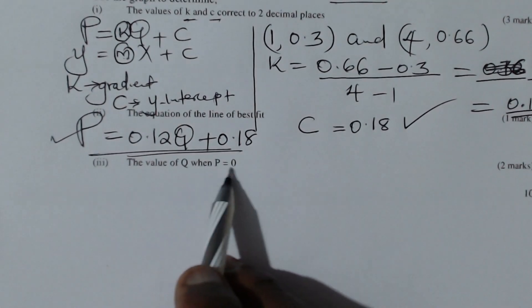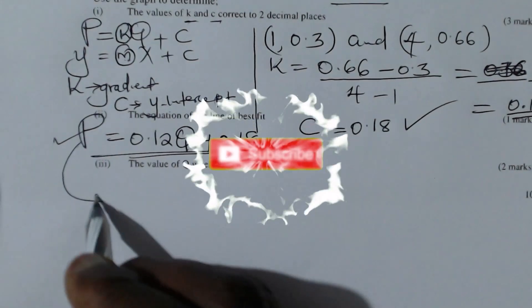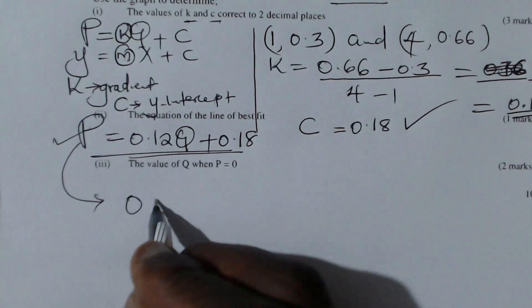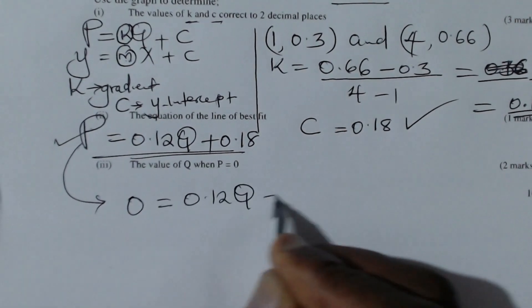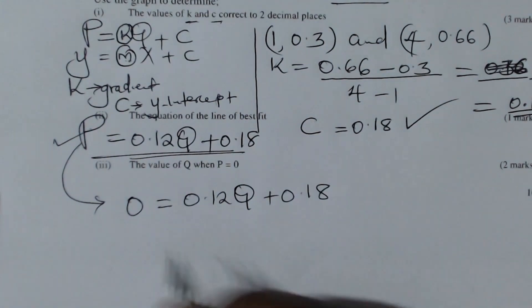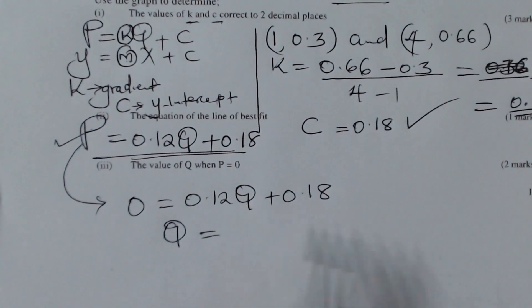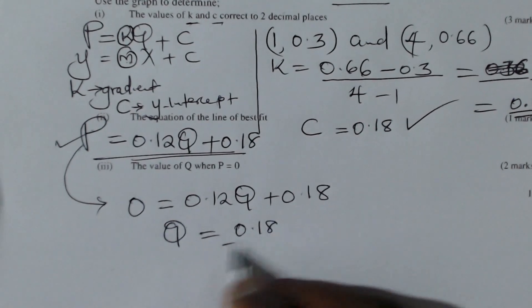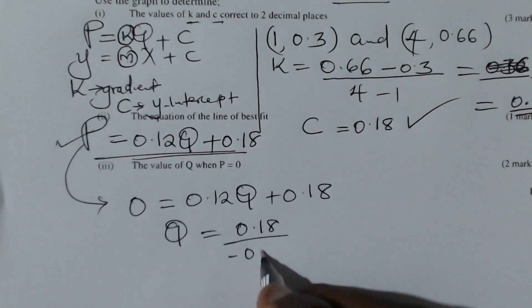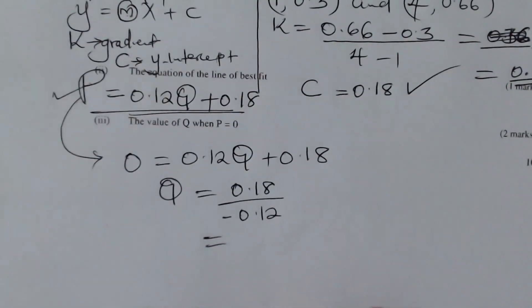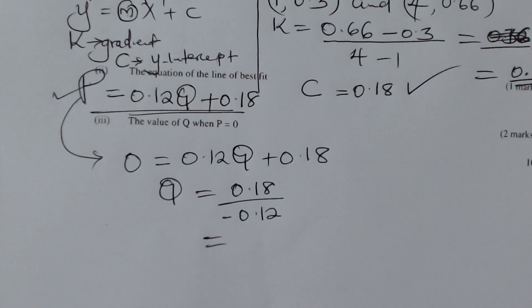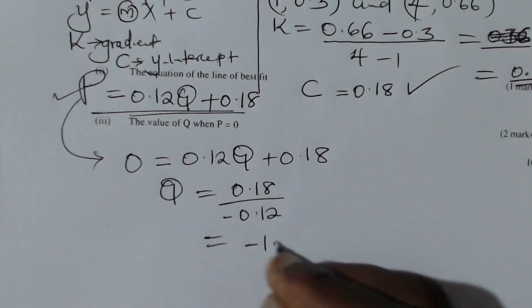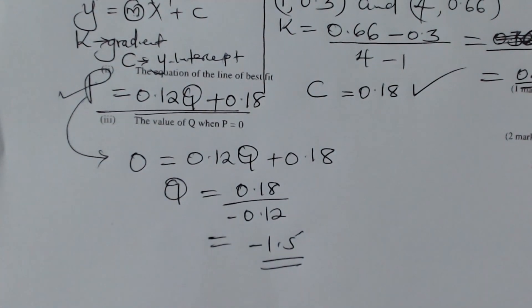The last part asks for the value of q when p equals zero. Substituting into the equation: 0 equals 0.12q plus 0.18. Solving for q gives q equals negative 0.18 divided by 0.12, which equals negative 1.5. And that is how we solve the question.